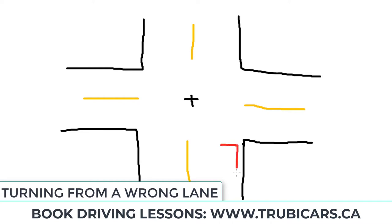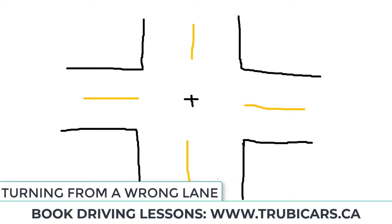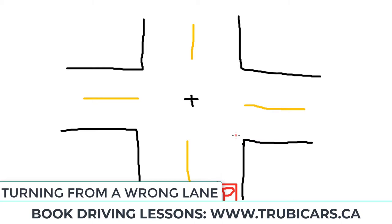If there is a parked car right at the intersection, that doesn't give you any other option — you have to turn from the second lane when you're far from the curb. But if the parked car is not super close to the intersection, you go around the car and then pull back to your side to complete your right turn. If you start turning from the far side and don't pull back to the right side, that's going to be a critical error.